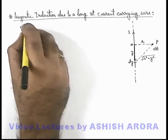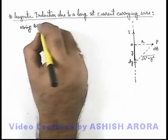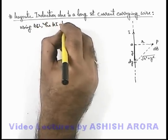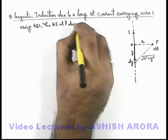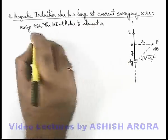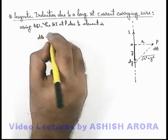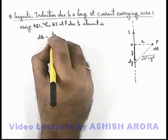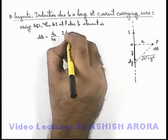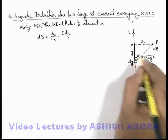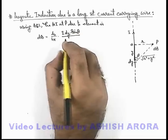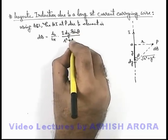Using Biot-Savart's law, the magnetic induction at P due to the element is: dB = (μ₀/4π) · (i·dy · sinθ) / (r² + y²), where θ is the angle shown in the geometry.